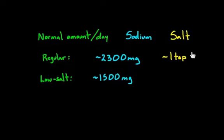And on a low salt diet, you're recommended to have no more than about 1,500 milligrams of sodium. And if one teaspoon equals 2,400 milligrams of sodium, then 1,500 is about two-thirds of it. So that's about two-thirds of a teaspoon of salt.